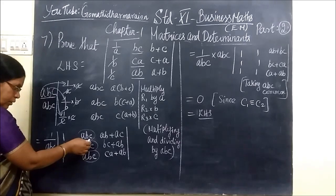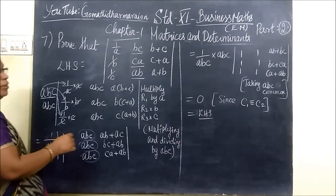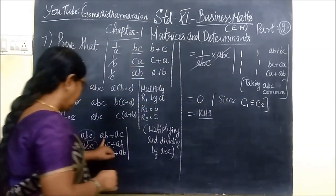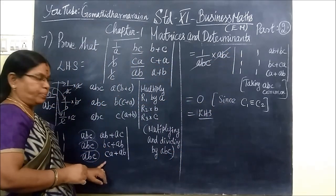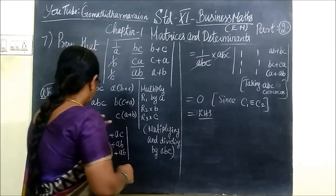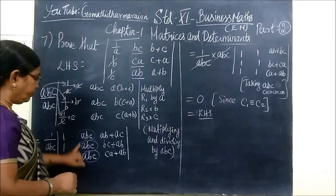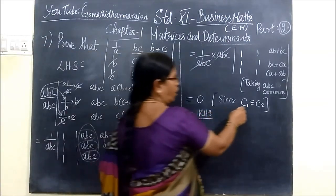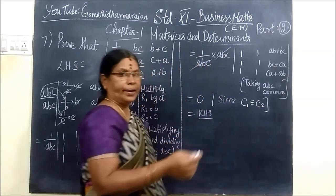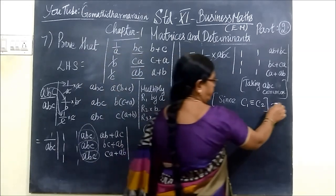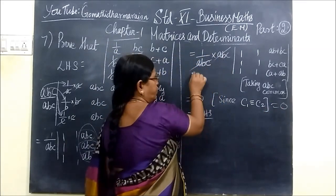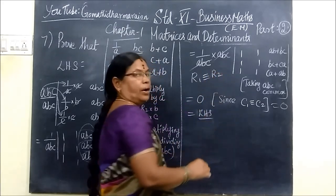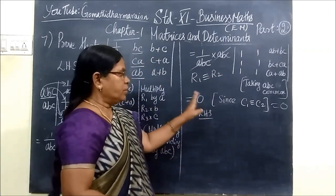And the next row A, B, C. That can be cancelled. The other group A, B, C can slide. So the pattern is 1, 1, 1. When two columns or rows are identical, the whole answer will be equal to 0. This is the property: R1 identically equal to R2, or C1 identically equal to C2.